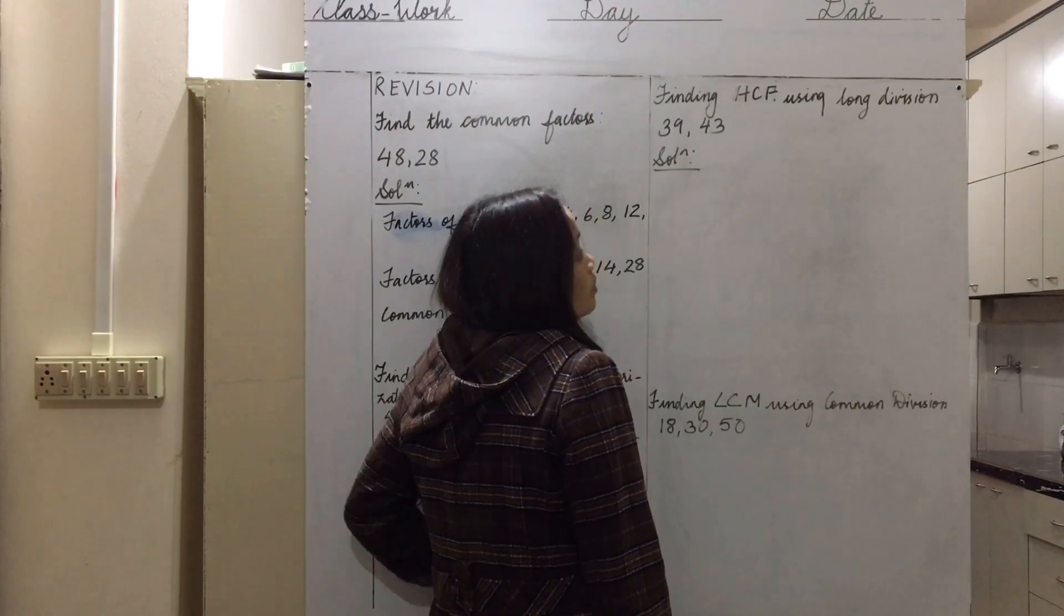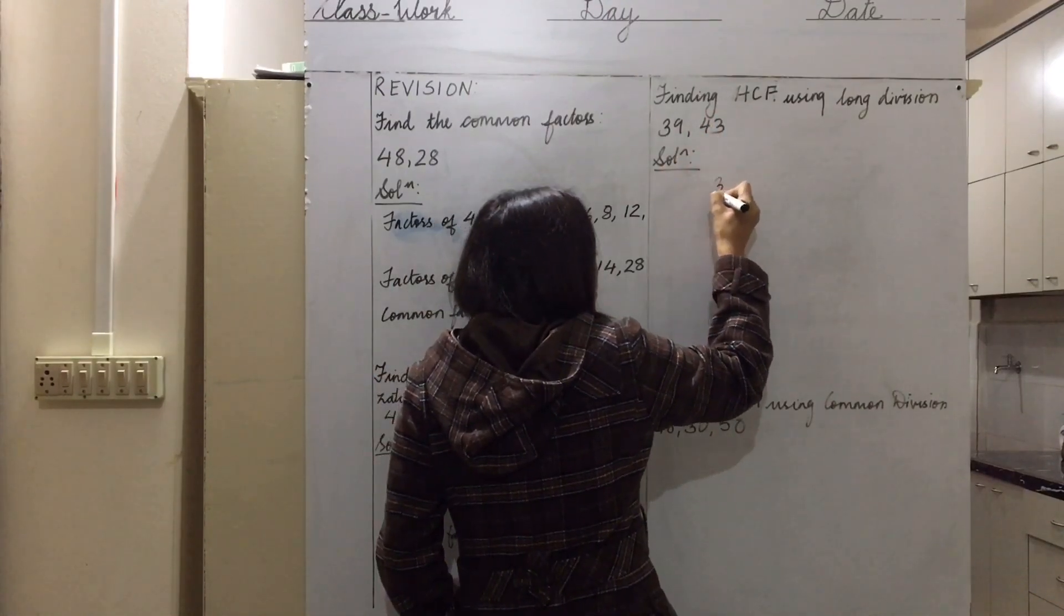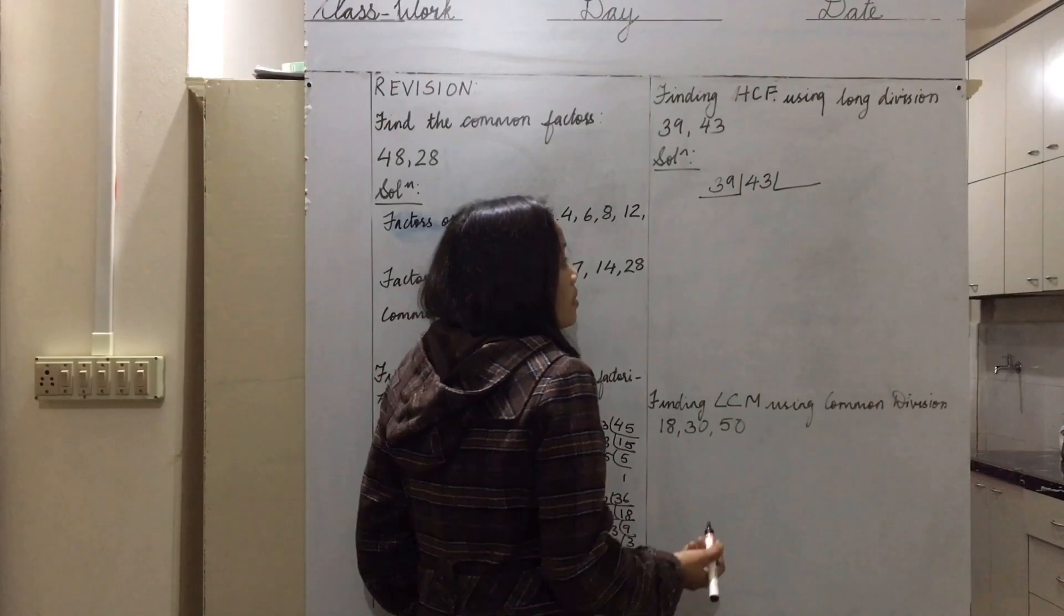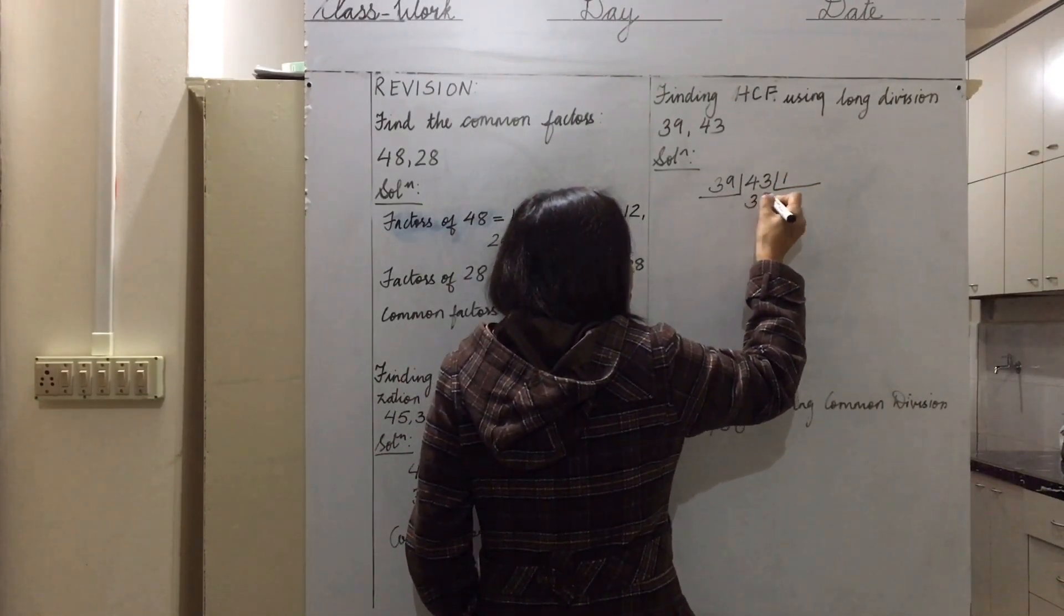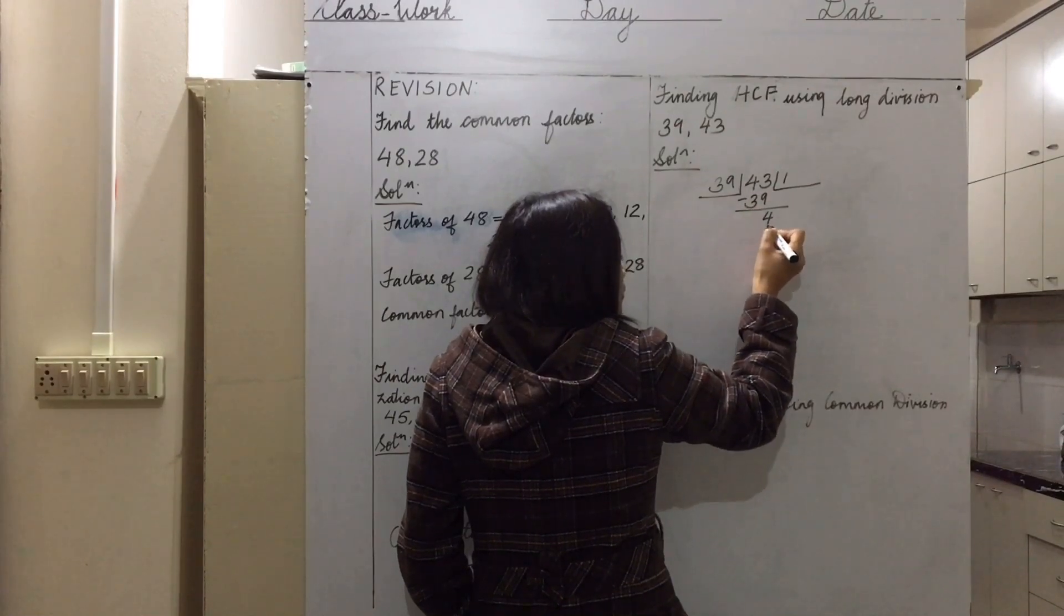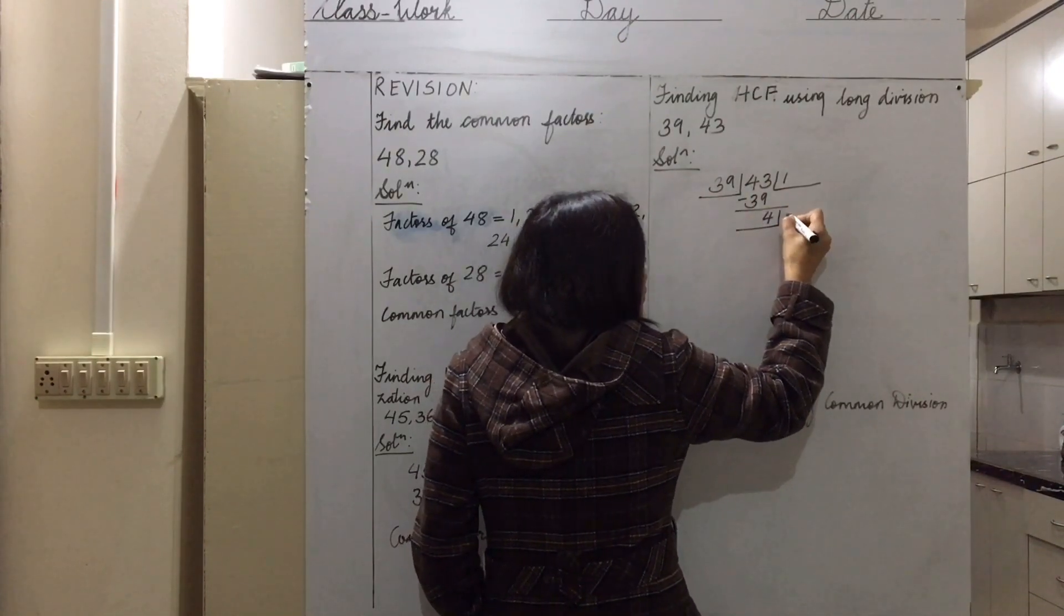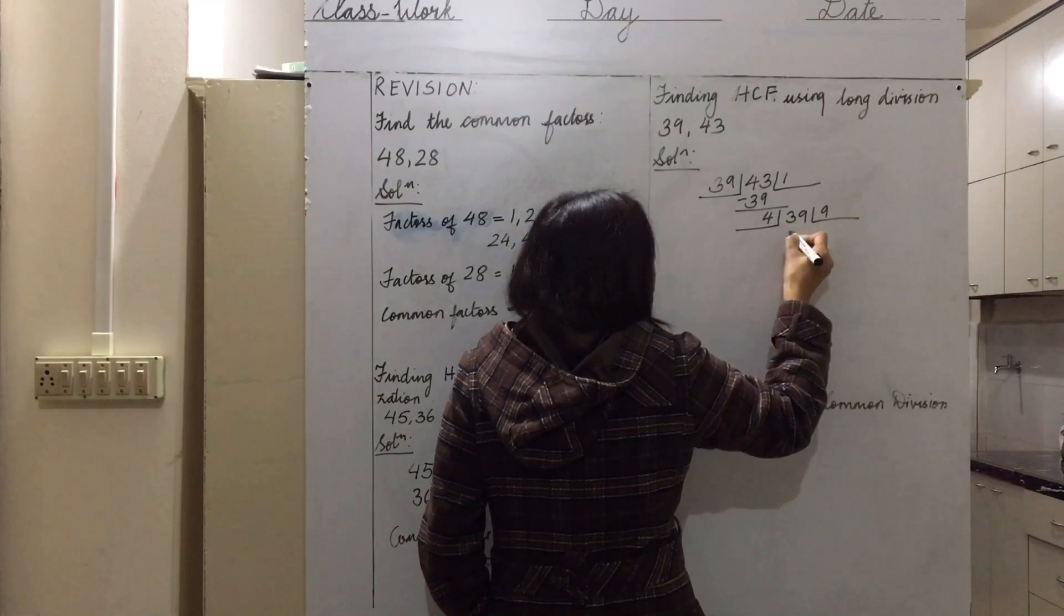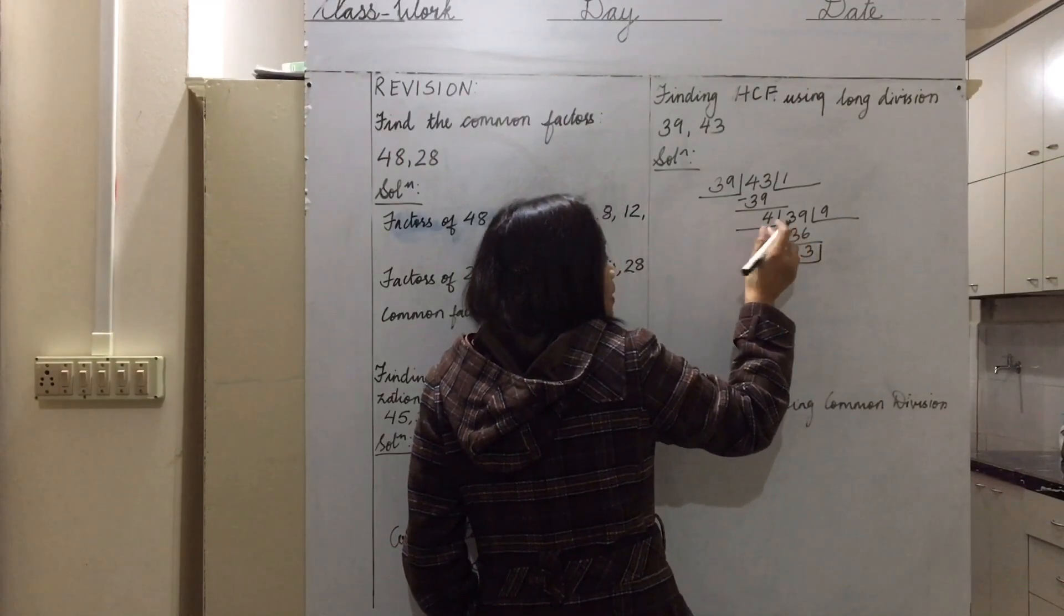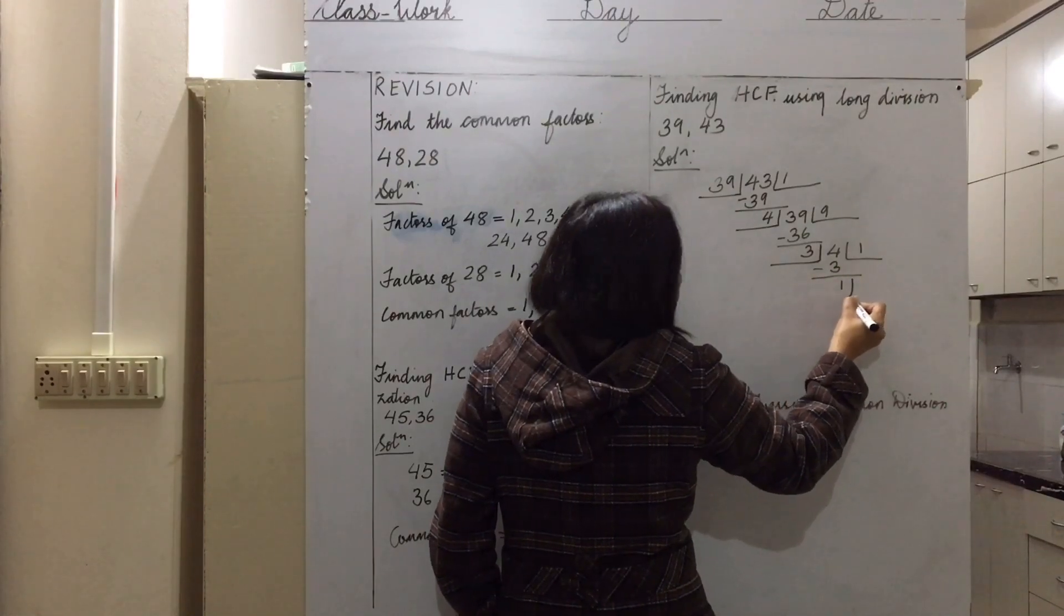Next, finding HCF using long division. In long division method, the smaller number 39 will divide the bigger number 43. We will keep on dividing until we get 0 as the remainder. 39 goes once, we subtract and get 4.